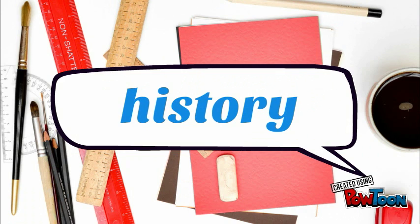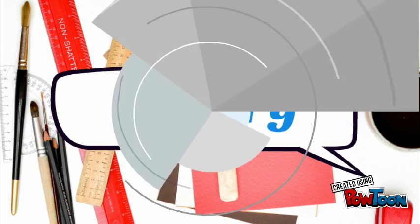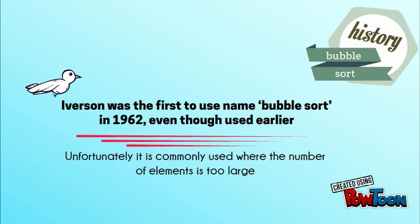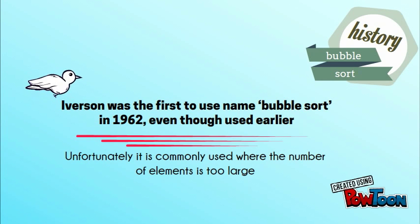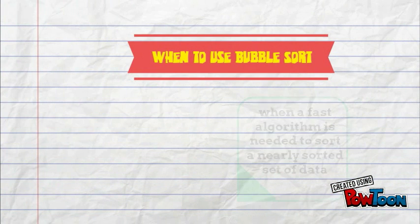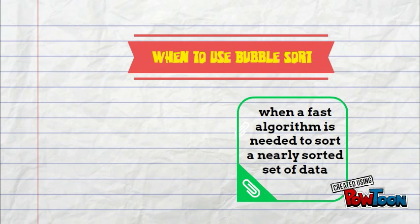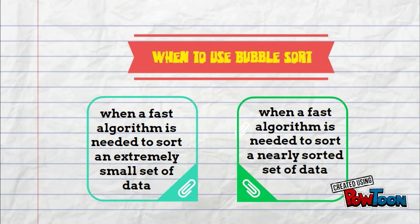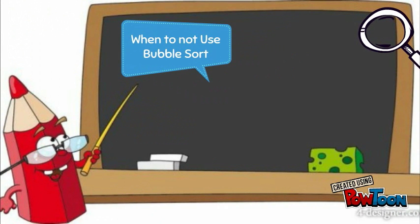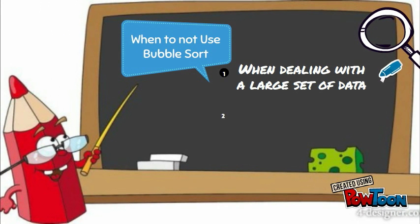Next is the history of bubble sort. Iverson was the first to use the name bubble sort in 1962, even though it was used earlier. Unfortunately, it is commonly used where the number of elements is too large. Bubble sort is used when a fast algorithm is needed to sort a nearly sorted set of data, or an extremely small set of data. But bubble sort cannot be used when dealing with a large set of data, and it is really slow compared to other sorting algorithms.